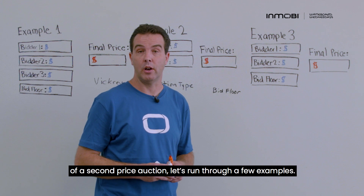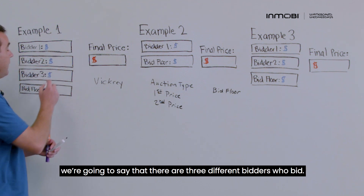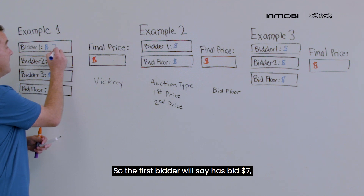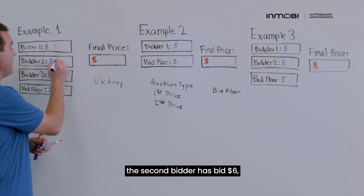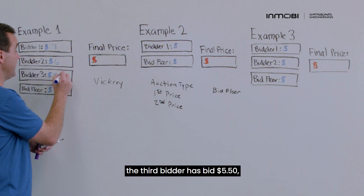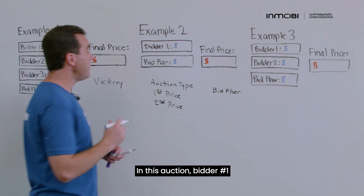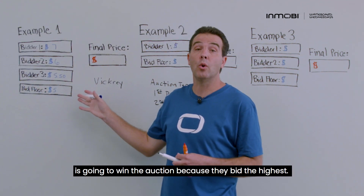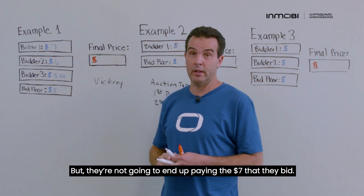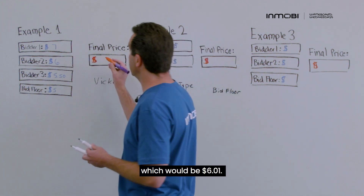Now that we've defined the basic elements, let's run through some examples. In our first example, there are three different bidders: Bidder One has bid seven dollars, Bidder Two has bid six dollars, and Bidder Three has bid five dollars and fifty cents. There's a bid floor of five dollars. Bidder One wins the auction because they bid the highest, but they don't pay the seven dollars they bid — they only pay one cent higher than the second highest bid, which is six dollars and one cent.